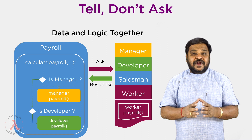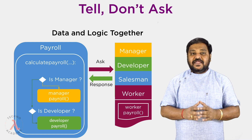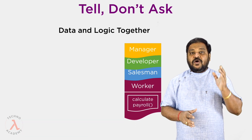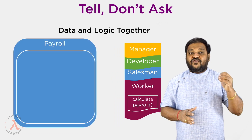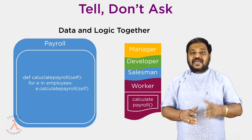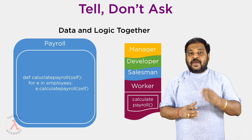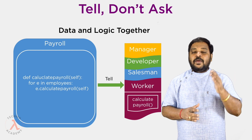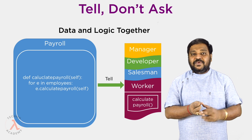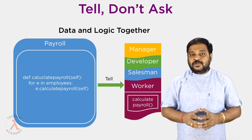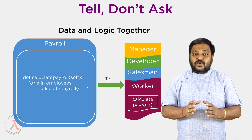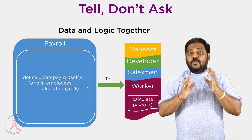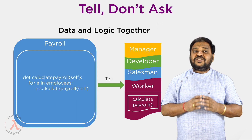Instead, what we need to do is encapsulate that logic in the type itself and tell it to perform the action. Remember that packaging state and behavior together is the basic principle in object-oriented design. If the Tell Don't Ask principle is followed, the calculate payrolls method can simply loop over the collection of employees and tell each one to calculate the payroll itself — whether the employee is a manager, developer, or salesperson is irrelevant to the calculate payrolls method.